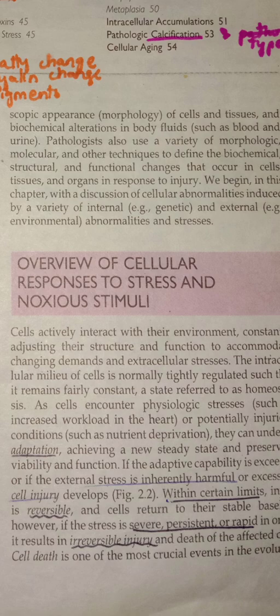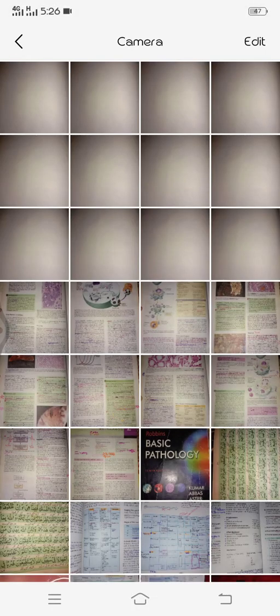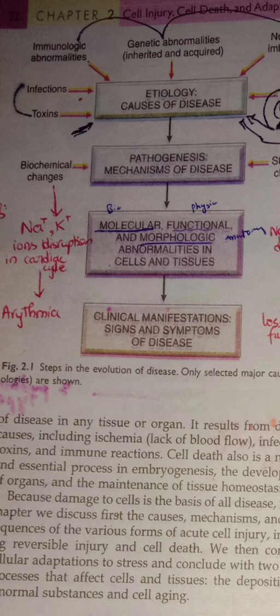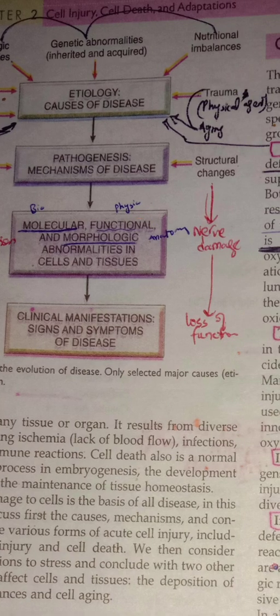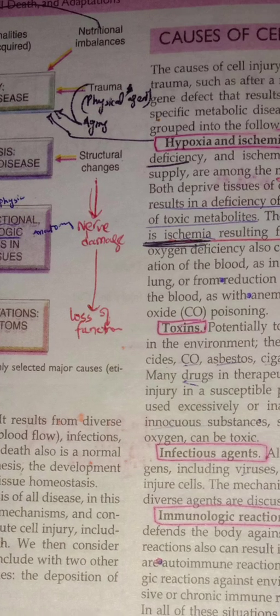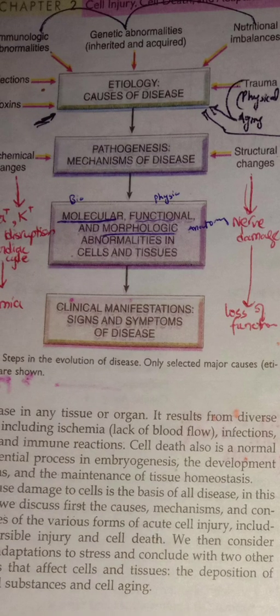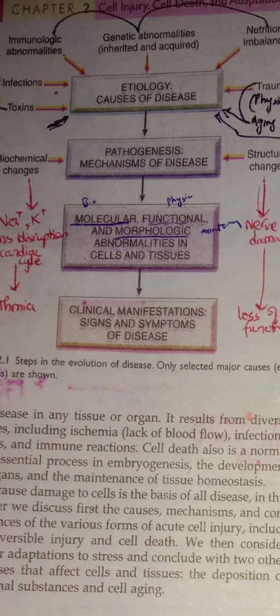When there is severe, persistent, or rapid change, it causes irreversible injury. The causative factors include infections, toxins, immunological injuries, genetic, and nutritional factors — these are the etiology. Then comes the mechanism or pathogenesis, leading to abnormalities in molecular, functional, and morphological structure. Finally, it leads to a disease causing clinical manifestations. For example, disruption of sodium-potassium ion balance like hyponatremia or hypokalemia causes arrhythmia, which leads to other heart problems.